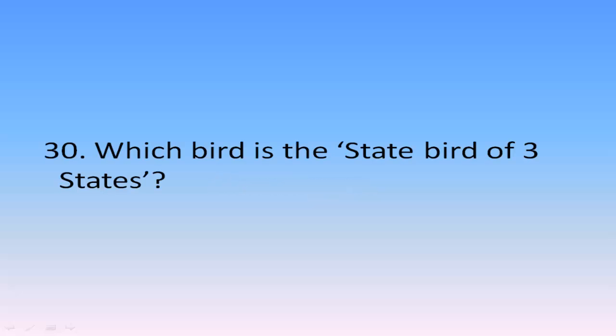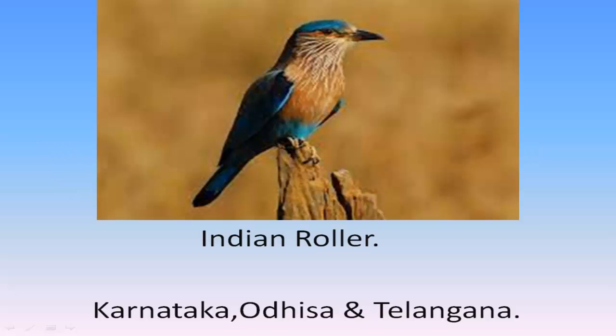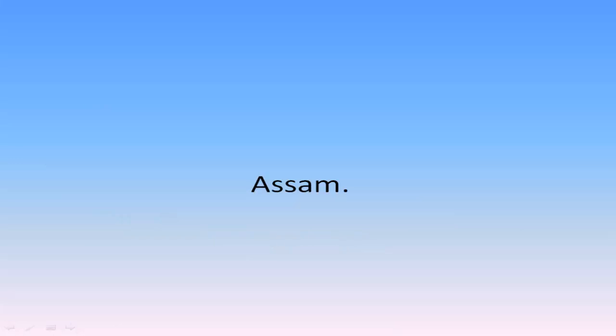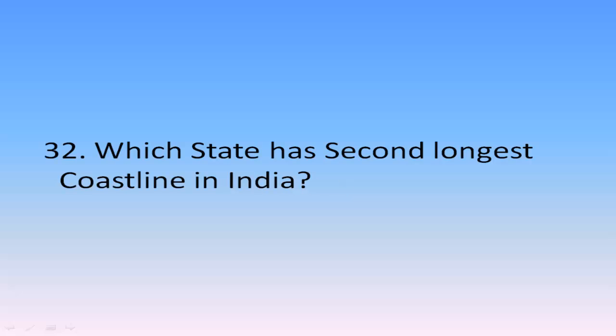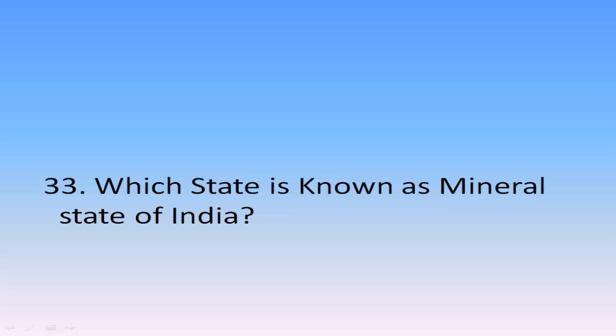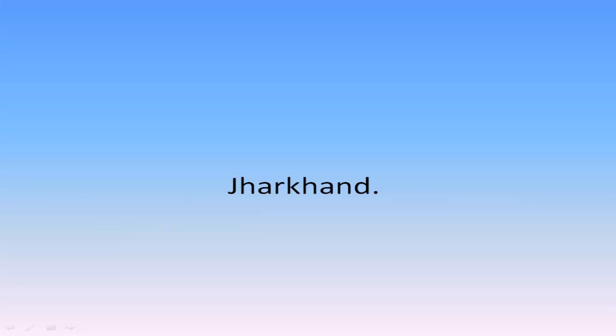Which bird is the state bird of three states? The Indian roller. It is the state bird of Karnataka, Odisha, and Telangana. Which state in India is the largest producer of tea? Assam. Which state has the second longest coastline in India? Andhra Pradesh, with a 974-kilometer length. Which state is known as the mineral state of India? Jharkhand.